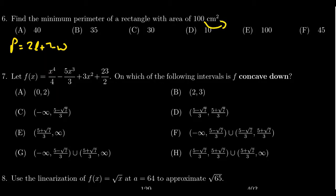What do we know about the area? Well, we know that area is length times width and it equals 100. So we can solve for one of these variables. So we get that the length is equal to 100 over W.